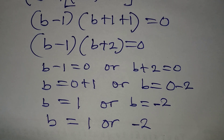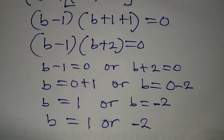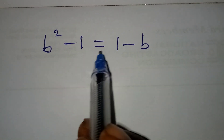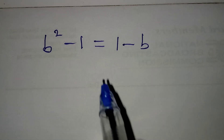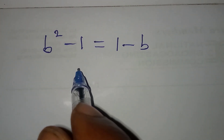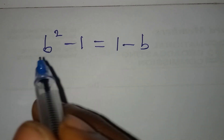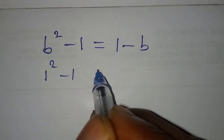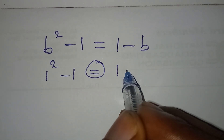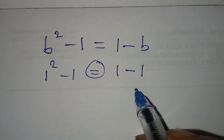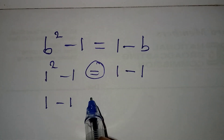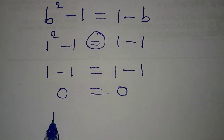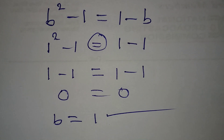Let's substitute these values back into the original equation b squared minus 1 equals 1 minus b. If b equals 1: 1 squared minus 1 equals 1 minus 1, which gives 0 equals 0. So b equals 1 satisfies the equation.